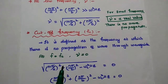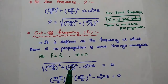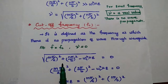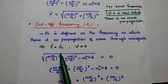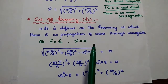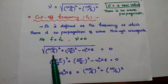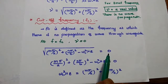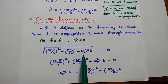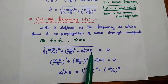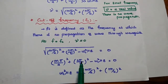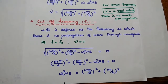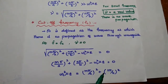Next, cutoff frequency Fc. It is defined as the frequency at which there is no propagation of wave through the waveguide — the lowest frequency at which there is no wave propagation. Whenever the frequency equals the cutoff frequency, the propagation constant becomes zero. So we write: square root of (Mπ/a) whole squared plus (Nπ/b) whole squared minus omega_c squared mu epsilon equals zero. Squaring both sides and rearranging, omega_c squared mu epsilon equals (Mπ/a) whole squared plus (Nπ/b) whole squared. Moving mu epsilon to the denominator, omega_c squared equals (1/mu epsilon) times [(Mπ/a) whole squared plus (Nπ/b) whole squared].